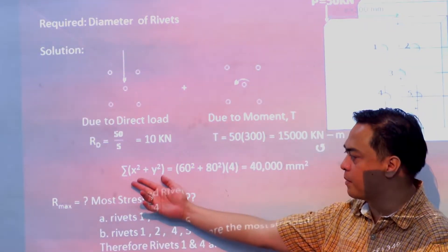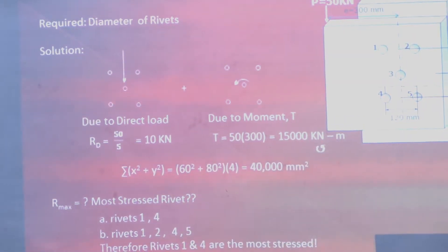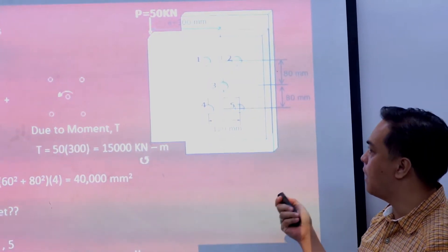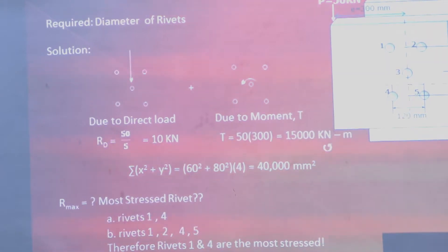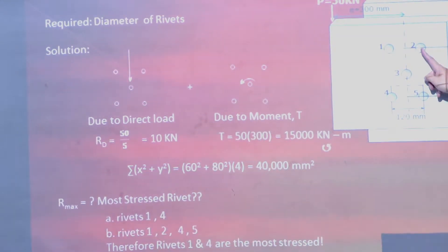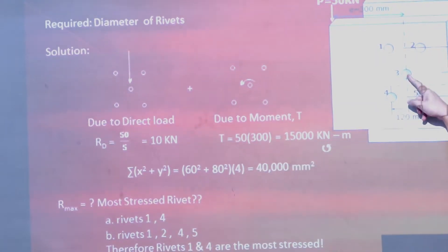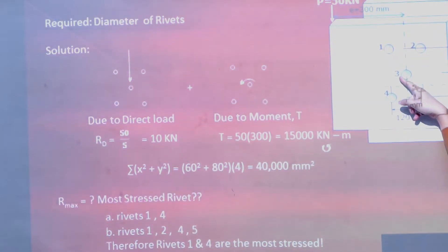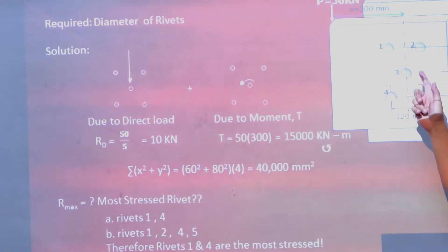I solved for the summation of x² plus y². For rivet number 1, its horizontal distance x is 60, so we have 60². Its vertical distance y is 80, so 80². The x² and y² values for rivet 1 are the same as for rivets 2, 4, and 5 — all four pieces. For rivet number 3, its x and y are both equal to 0 because its center coincides with the center of the group.